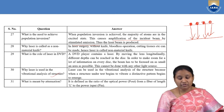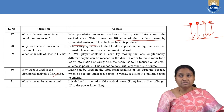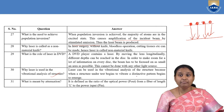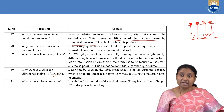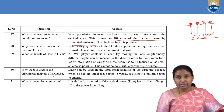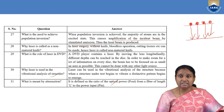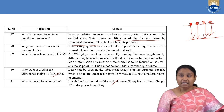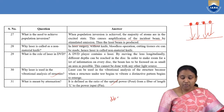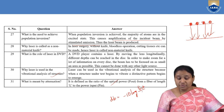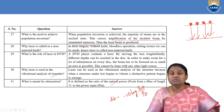Why is laser used in vibrational analysis of structures? When a structure under test is exposed to laser, it vibrates and a distinct pattern emerges. By analyzing that distinct pattern, we can better understand the particular structure. What is meant by attenuation? Even with care taken in fiber optic communication, a small loss of energy occurs. Attenuation is measured in decibels as a logarithmic ratio of output power to input power — it is the loss associated with propagation of information through optical fibers.